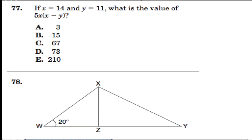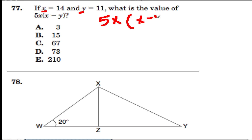Here we have an algebra problem, and they're giving us the values of x and y. They're saying if x is 14 and y is 11, what is the value of this right here? So let's go over that really quick. It's saying 5x, and it has parentheses x minus y. This means 5x times x minus y.